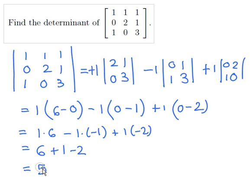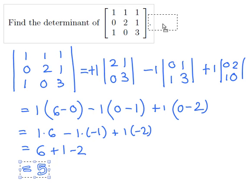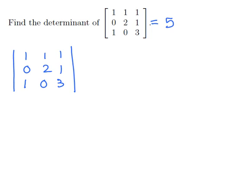Now let's take this 5 and stick it up here — we know the determinant is equal to 5. But let's try to recompute this determinant a different way, using a different row or column. This time, let's try expanding along the second column. This is a good choice because it has a 0 in it, and the more 0s you have, the less smaller determinants you need to compute.